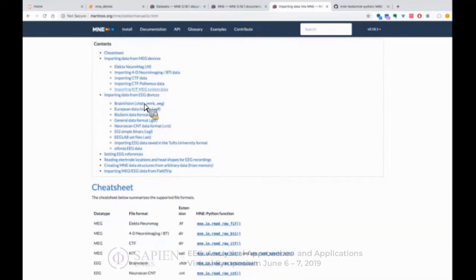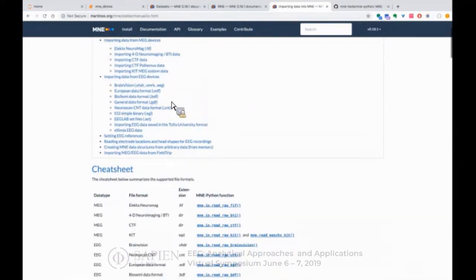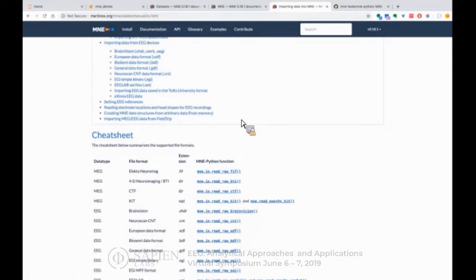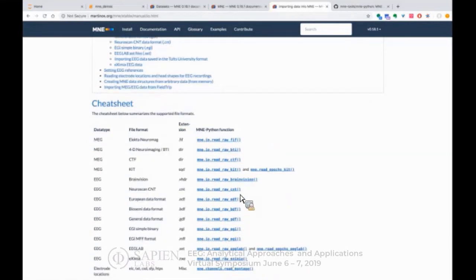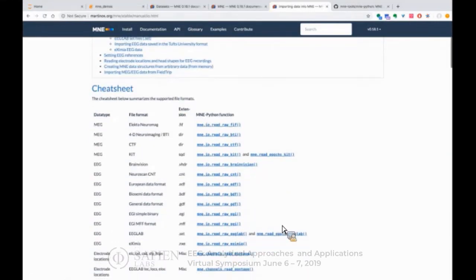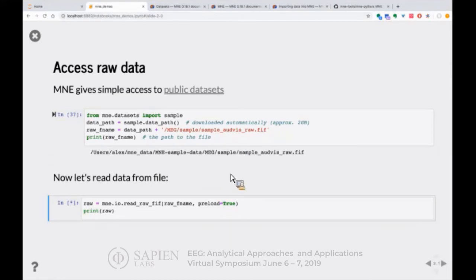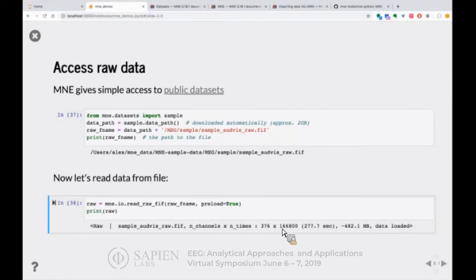If I execute this line, if I don't have the data I will download it. For me, since I already have it, you see it's going to take a FIF file. This is what we have for the sample data, but then you can read a number of other file formats. If you have different input types of data, EEG would be BrainVision, EDF, BioSemi, GDF, Neuroscan, CNT, EGI, EEGLAB, and all these things. We have a bunch of reading functions for these different EEG and MEG formats.